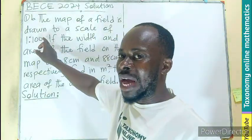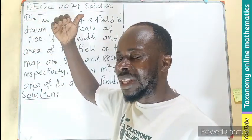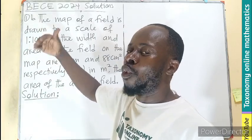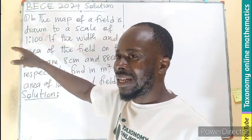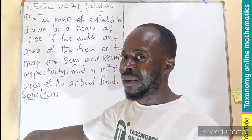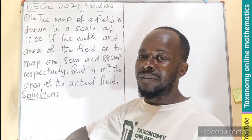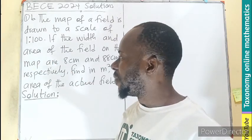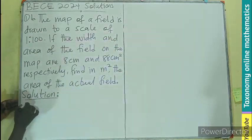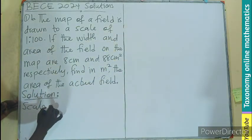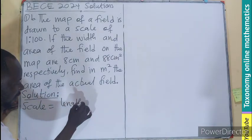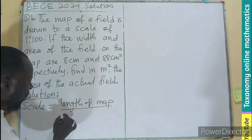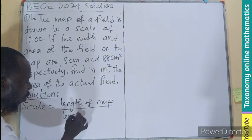The scale here is 1 to 200. It could be 1 centimeter on the map represents 100 centimeters on the field, or 1 meter on the field. So 1 represents a dimension on the ground, then 100 represents a dimension on the map for 1, then 100 for the actual field. By recall, a scale drawing equals the length on the map divided by the length on the ground.